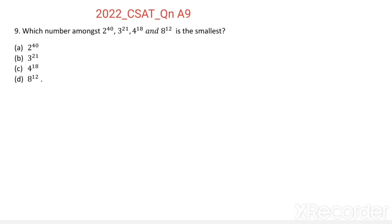Question number 9: Which number amongst 2 power 40, 3 power 21, 4 power 18, and 8 power 12 is the smallest? So here we want to find the smallest among these four numbers.